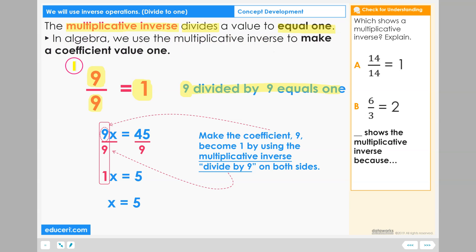In algebra, we use the multiplicative inverse to make a coefficient value become one when solving for a variable. We want to have the variable x all alone by itself, and if you have nine times x, then we need the nine to become a one.